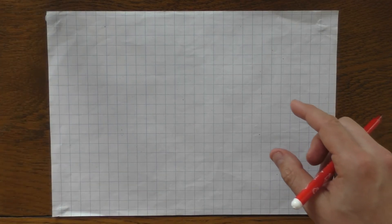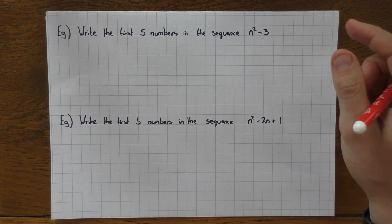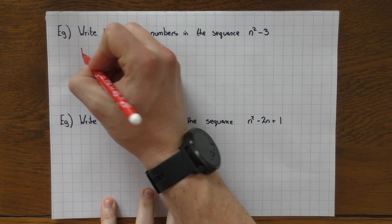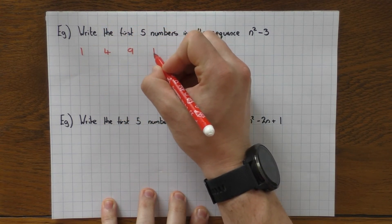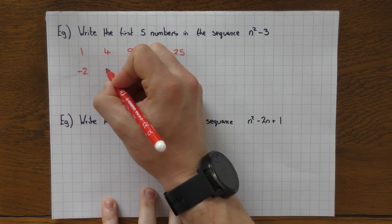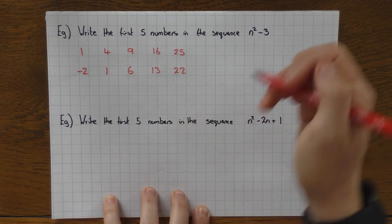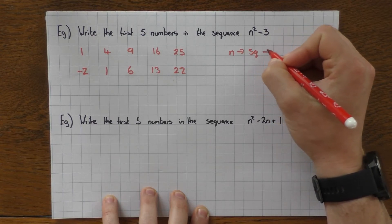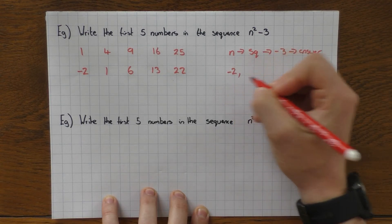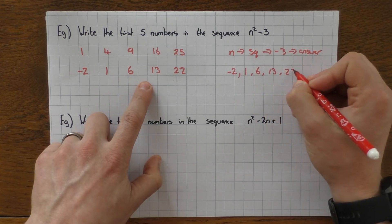So let's have a look at something a bit trickier. These ones are slightly different — you notice now it's got a squared, so it's an n squared. In this case it's not too bad; you can just write down the square numbers. So 1 squared is 1, 2 squared is 4, 3 squared is 9, 4 squared is 16, and 5 squared is 25. Then we just take away 3, giving us minus 2, 1, 6, 13, and 22. Again, you could flowchart it: n, square that number, take away 3, and get your answer.